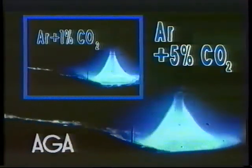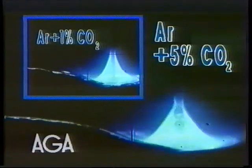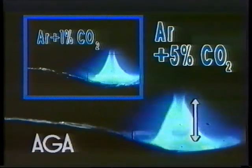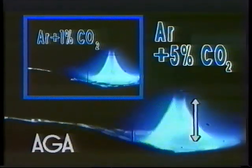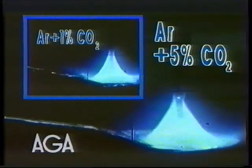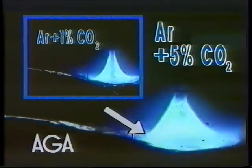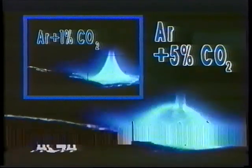5% carbon dioxide in argon decreases the length of the melted column even further, and more well-defined drops are formed. The pressure on the weld pool is increased, which improves sidewall penetration.